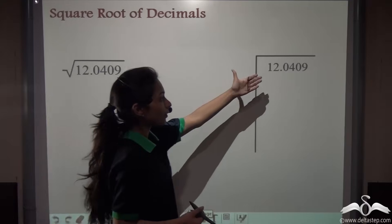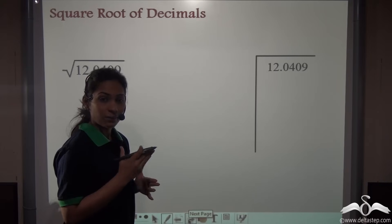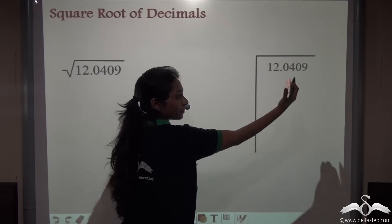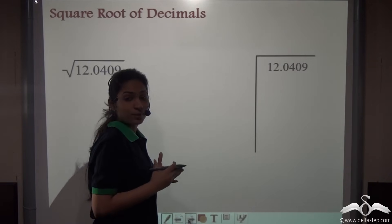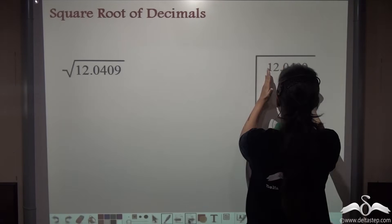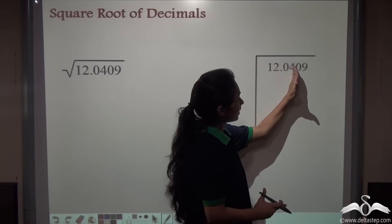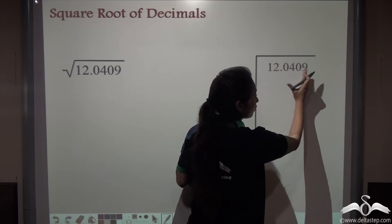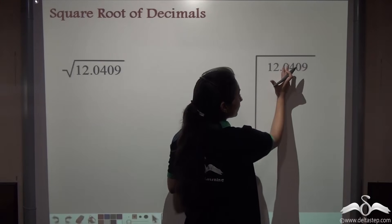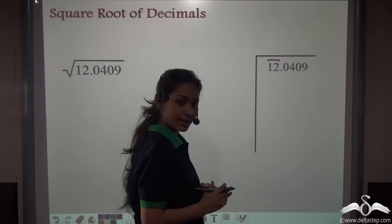First of all we write the number. What is the first step in long division method? We start placing the bar. How do we place the bar? We place the bar from the ones digit, that is from that side. But when it is a decimal number, this thing changes. What we do is we place the bar separately from the decimal point — from the decimal point towards the ones digit, and after the decimal point from left to right. So let's start placing the bar. From the decimal point to the left, we will place a bar over a pair of digits like this.